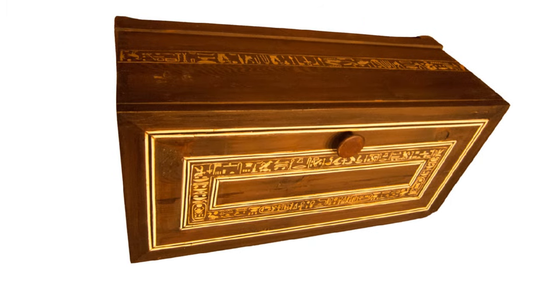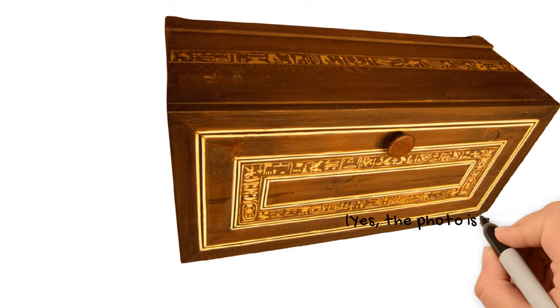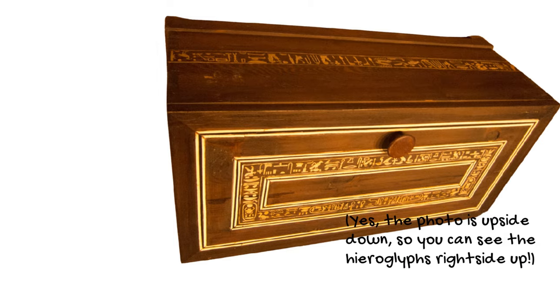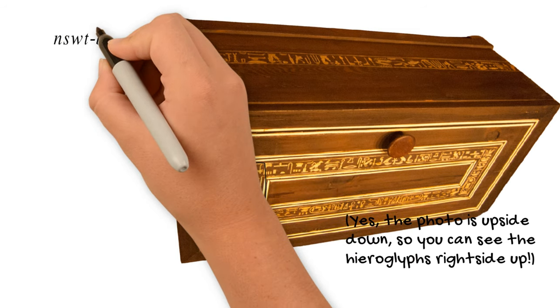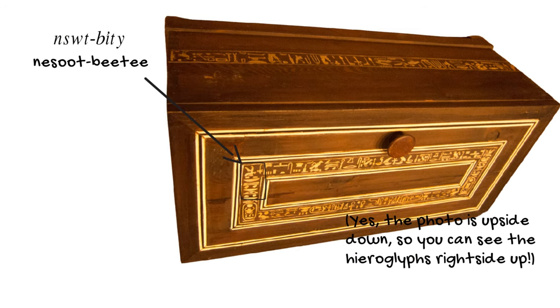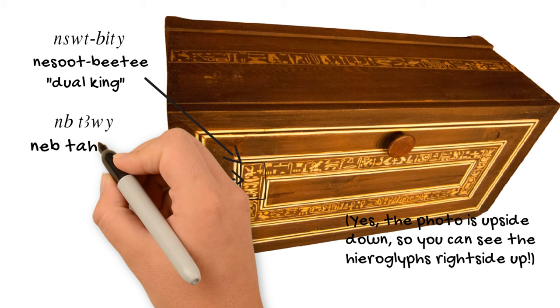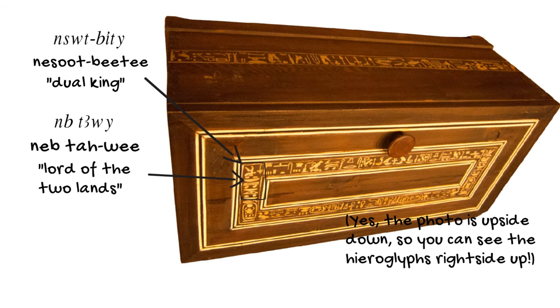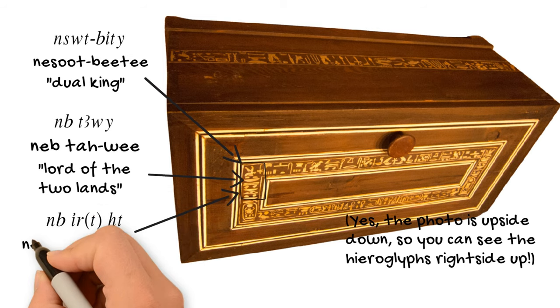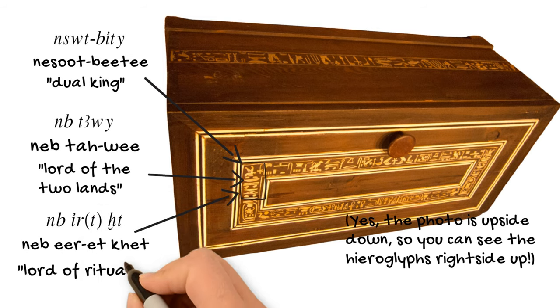Okay, so back to the example. On this box, which is from the tomb of Tutankhamun, we can see he is called, before his throne name, Nesut Biti, which we've seen before, the dual king. Then Neb Tawi, Lord of the Two Lands, another one we talked about in this series. And then he's called Neb Yerrhet, Lord of Ritual Action. So you see this all over the place. Of course, it's not the absolute most common of epithets, but it is very common.